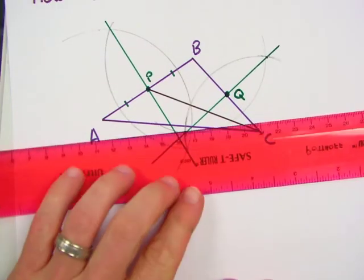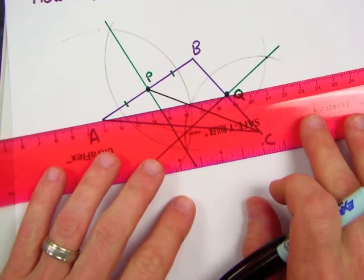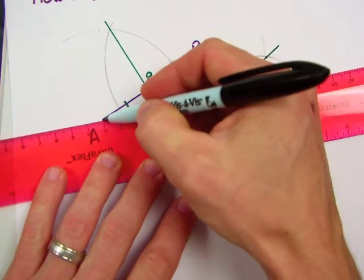And now we're going to draw the median from our vertex A.